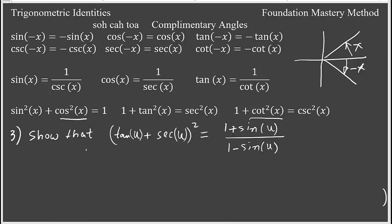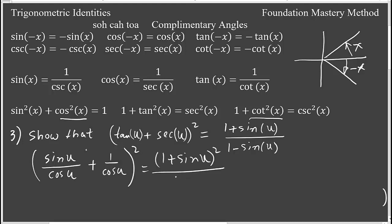Example 3: we need to show that (tan u + sec u)² equals (1 + sin u) / (1 − sin u). Starting from the left side: tangent u is sine u over cosine u, and secant u is 1 over cosine u. So we have (sin u + 1)² over cosine squared u. Now cosine squared u can be written as 1 minus sine squared u.